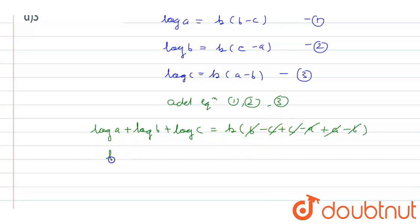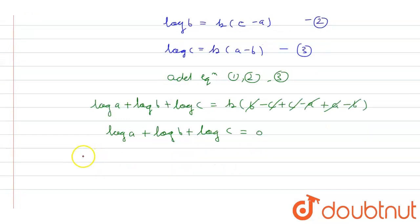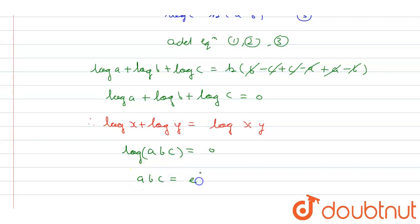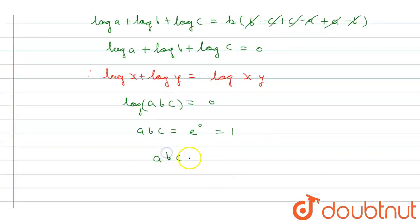So now log A + log B + log C = 0. We know one property which says if we have log X + log Y, then we can write it as log(XY). Apply this property: log(ABC) = 0. Now take anti-log both sides, then A·B·C = e raised to the power 0, and e raised to the power 0 is 1. So A·B·C = 1.